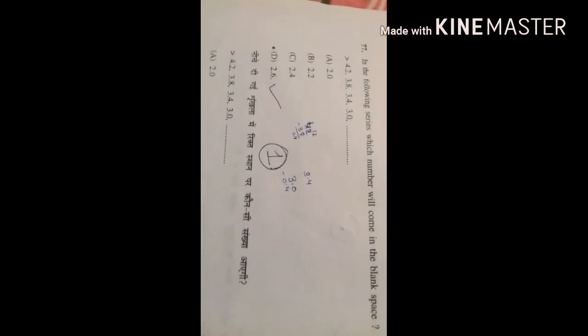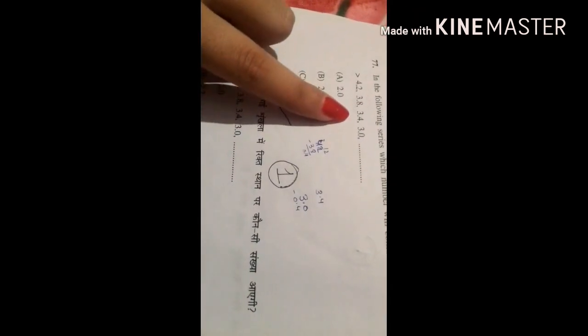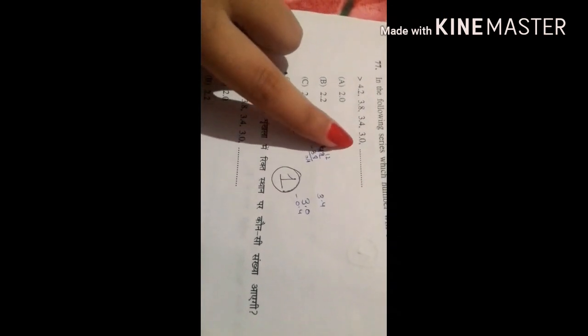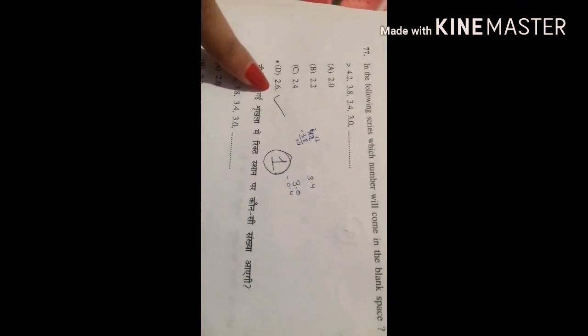And now the 77th question. This is a series. We have to fill the blank space and the difference between these numbers was only 0.4. So after subtracting 0.4, the correct answer is 2.6. Option number D is the correct option in 77th question.